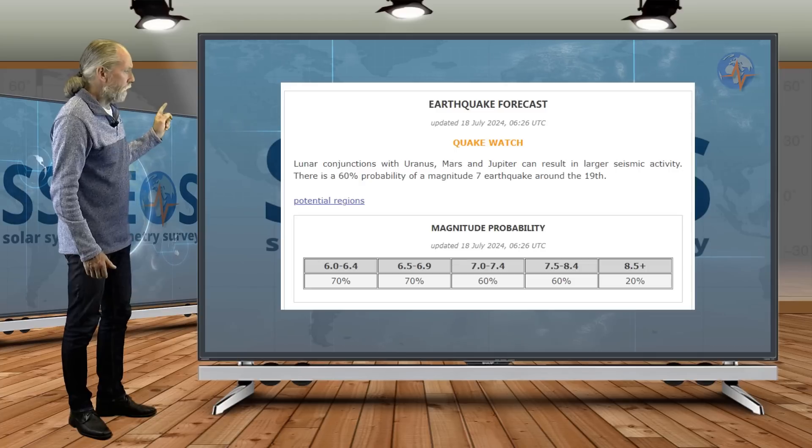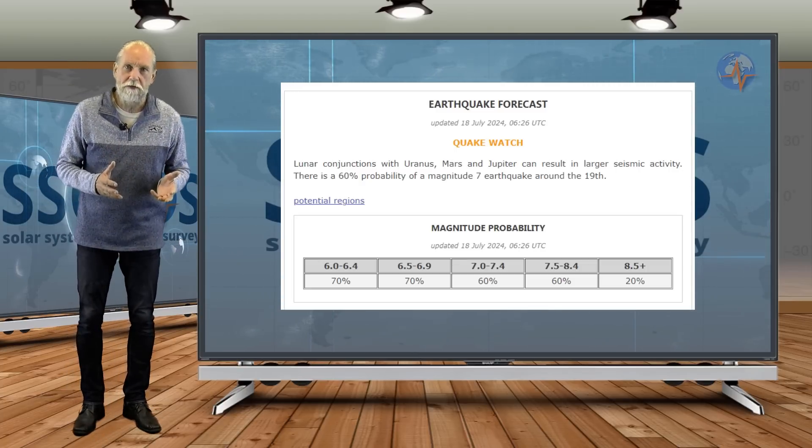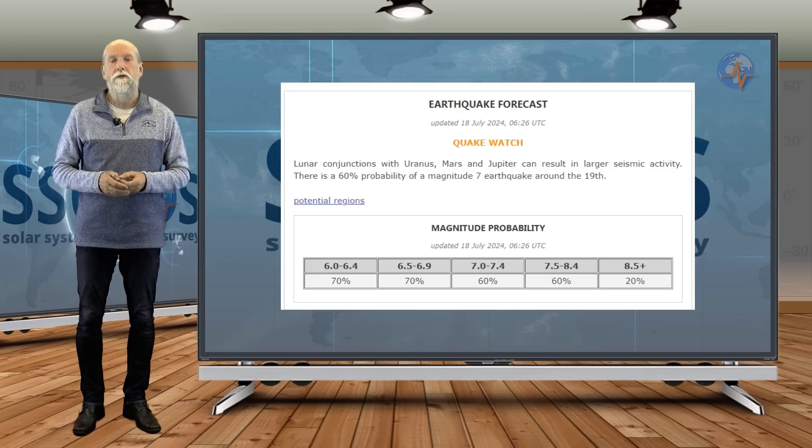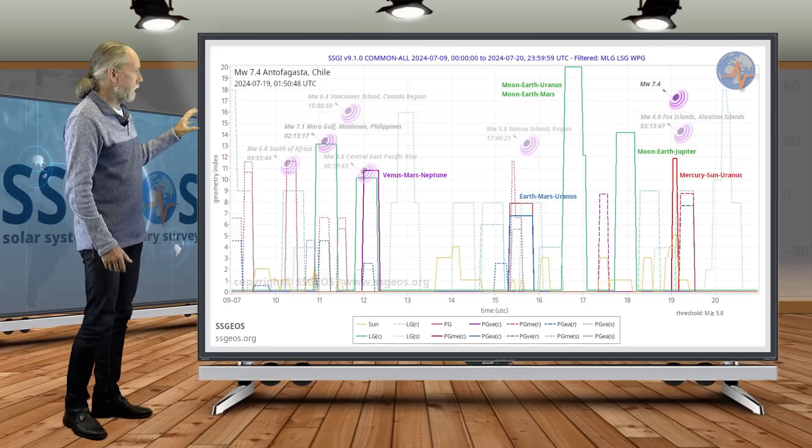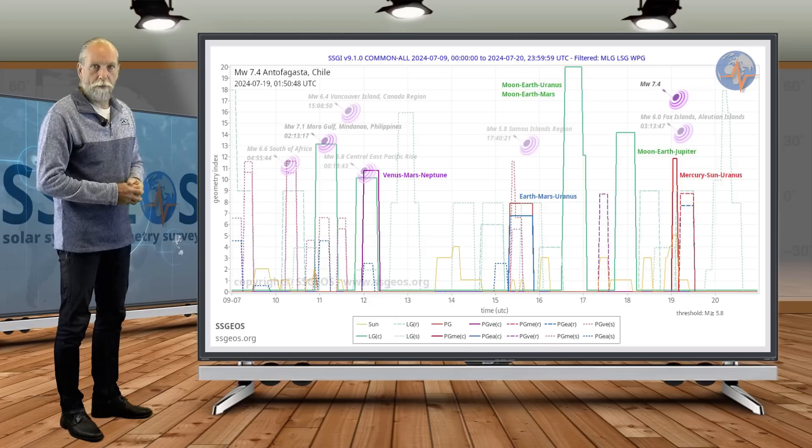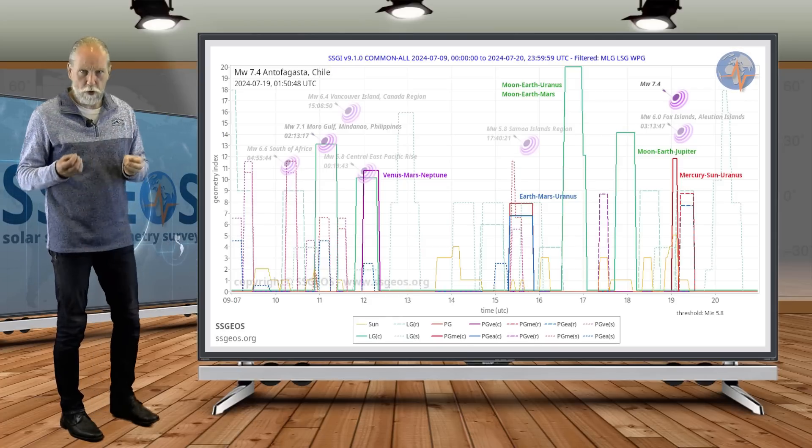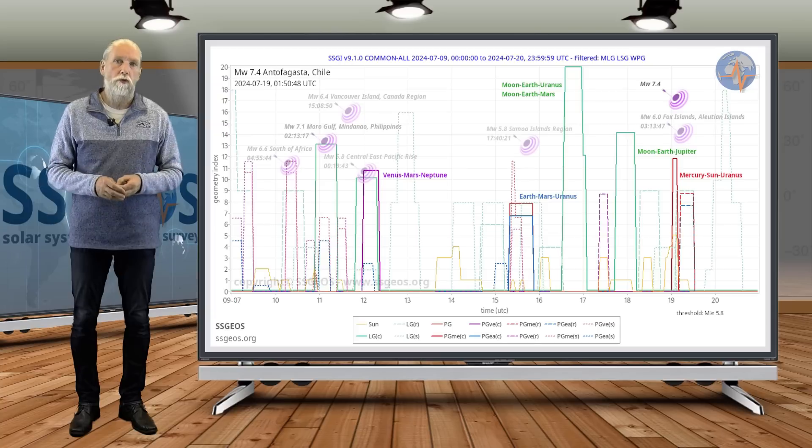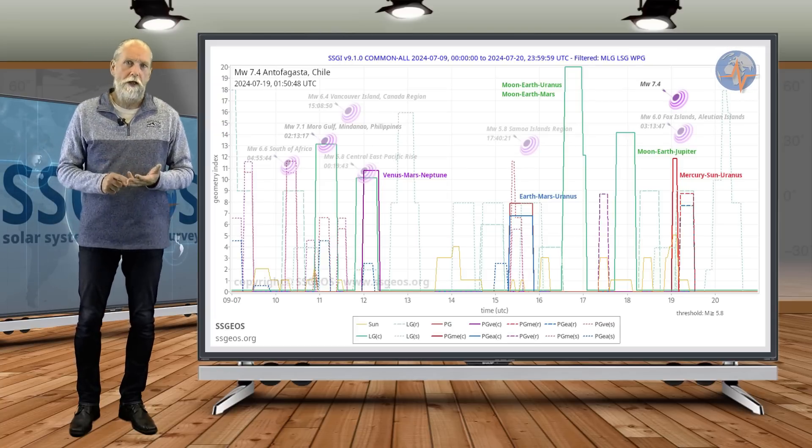And it is very important that you check out the website and the latest updates, because early on the 18th, we did an update that there was a 60% probability of a magnitude 7 earthquake around the 19th. And that was based on the geometry that we had and also the seismic activity that we had, and then this high lunar peaks, this lunar geometry on the 16th and 17th, especially with Jupiter. There can sometimes be a major earthquake following lunar conjunctions with Jupiter. But we had three of them with Uranus, Mars and Jupiter in two days.